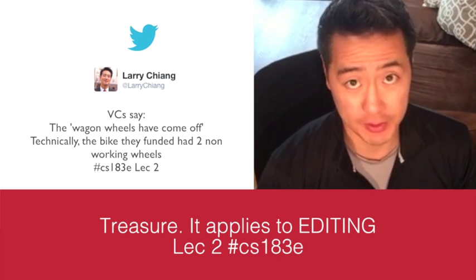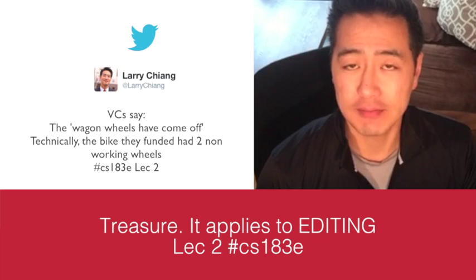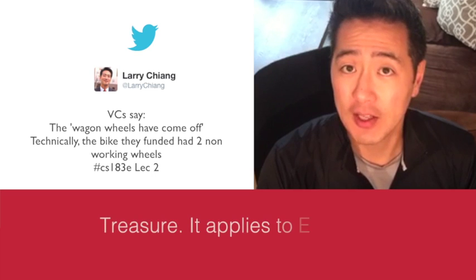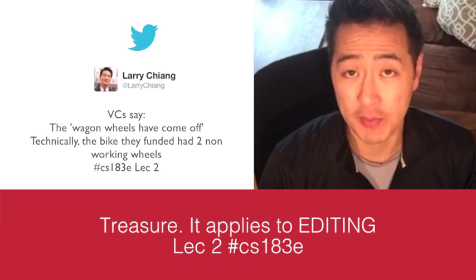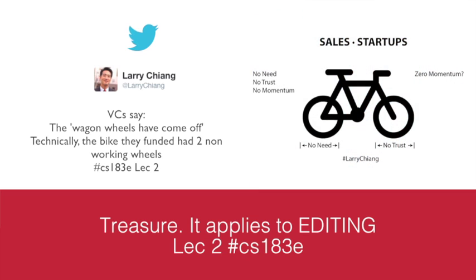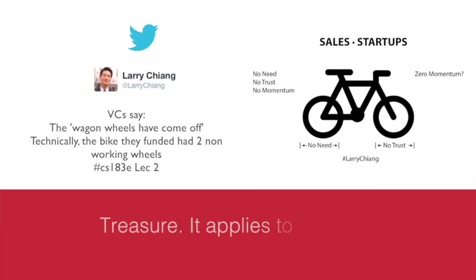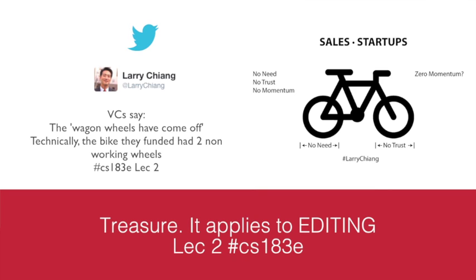VCs will say, at that startup the wagon wheels completely came off — means full mutiny, founders have quit, nothing's going in the right direction. Technically the two bicycle wheels were never functioning in the first place. This is the bicycle wheel — it's two lectures inside CS-183-S, as in sales: Lecture 5 and Lecture 7, which is the bicycle wheel pictured right here — no need and no trust, therefore no momentum. That's how distribution and treasure apply: you're solving no need, no trust from Lectures 5 and 7 of CS-183 sales.